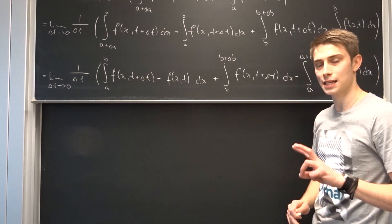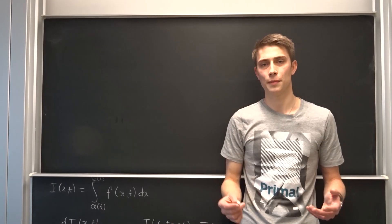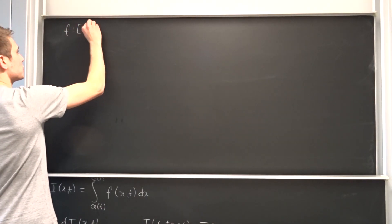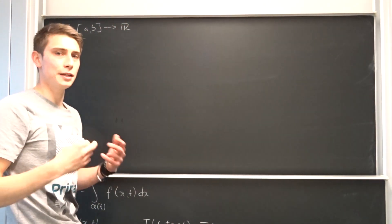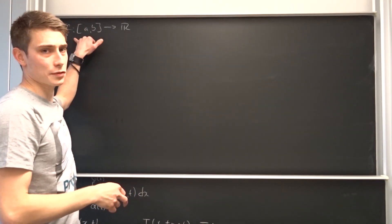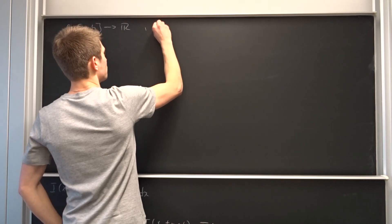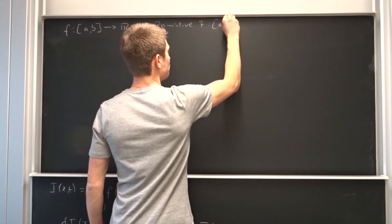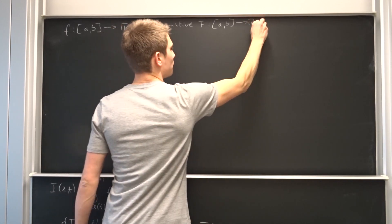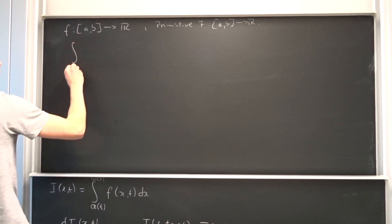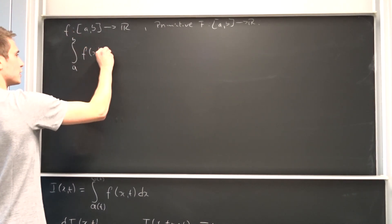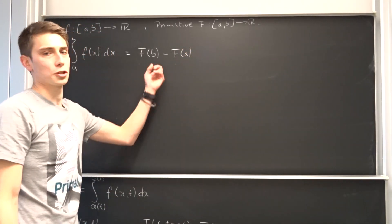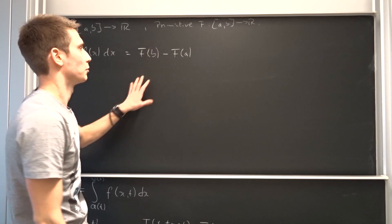Now we are going to take a look at the second part of the fundamental theorem of calculus. The fundamental theorem of calculus states that if we have some function f on a closed interval a to b, and if we have some primitive capital F of this function f, then the integral from a to b of f in terms of x, times dx, equals the primitive evaluated at b minus the primitive evaluated at a. You should be familiar with that.